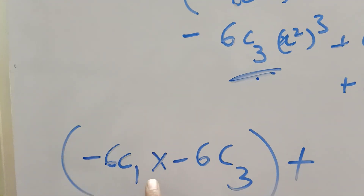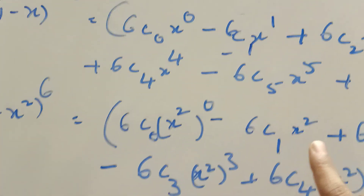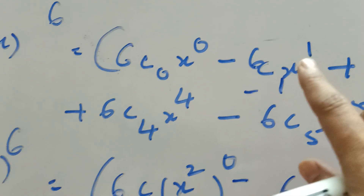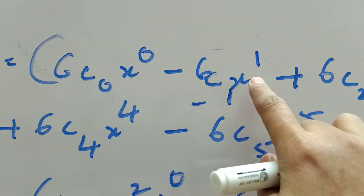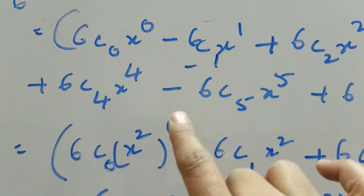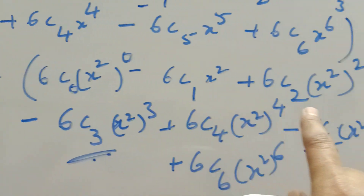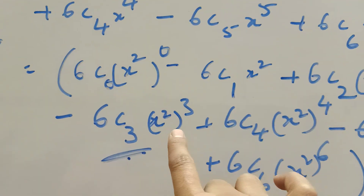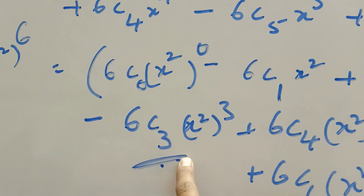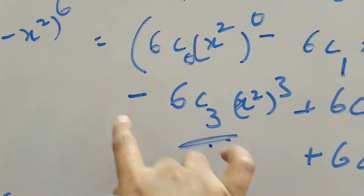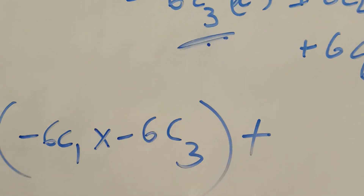Now we have minus 6C1 and minus 6C3 as coefficients. To find the coefficient of x power 7, the second contribution gives minus 6C3.